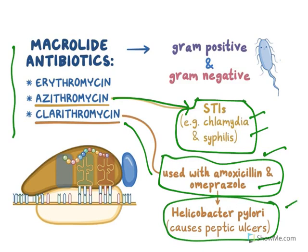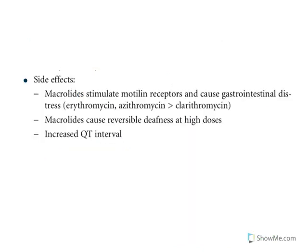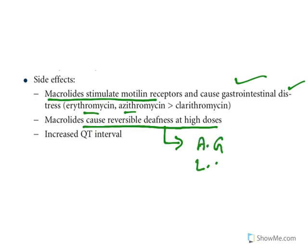Now side effects: macrolides stimulate motilin receptors and cause gastrointestinal distress. Erythromycin and azithromycin have got more propensity to cause gastrointestinal disturbances. Macrolides also cause reversible deafness at high doses. Understand this: this ototoxicity is also seen with aminoglycosides and loop diuretics. So when macrolides are used along with these, synergistically they cause increased ototoxicity. Care must be taken.